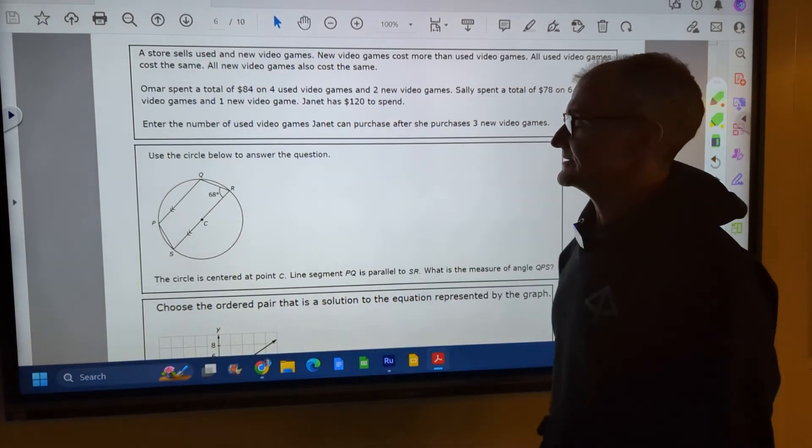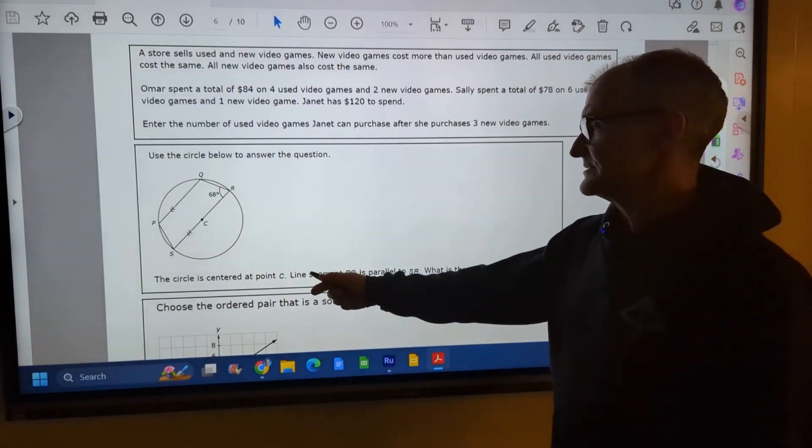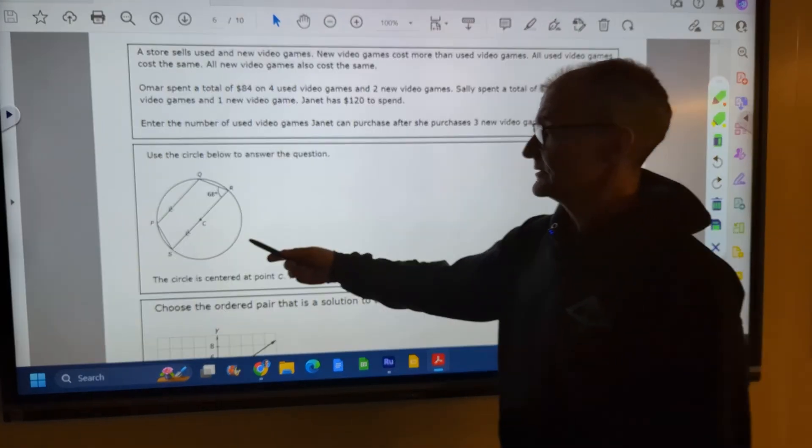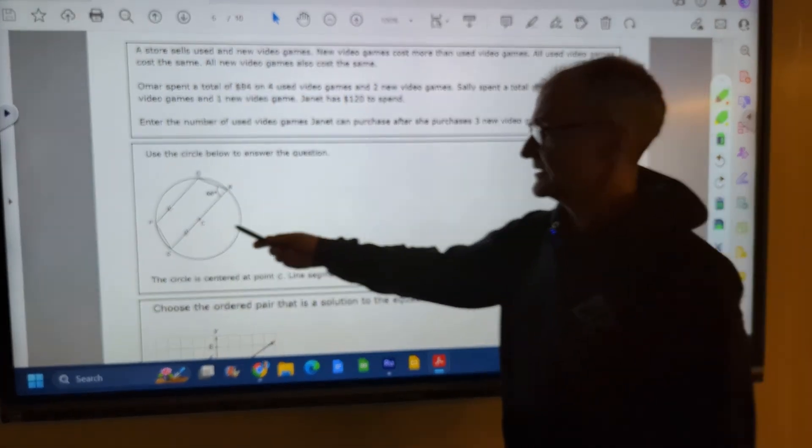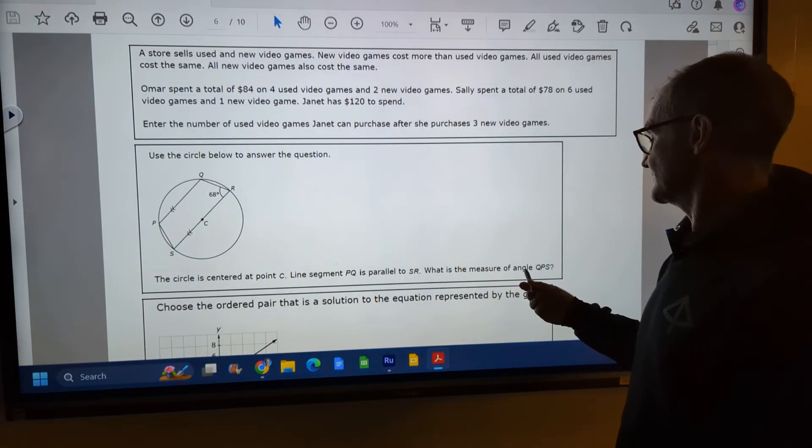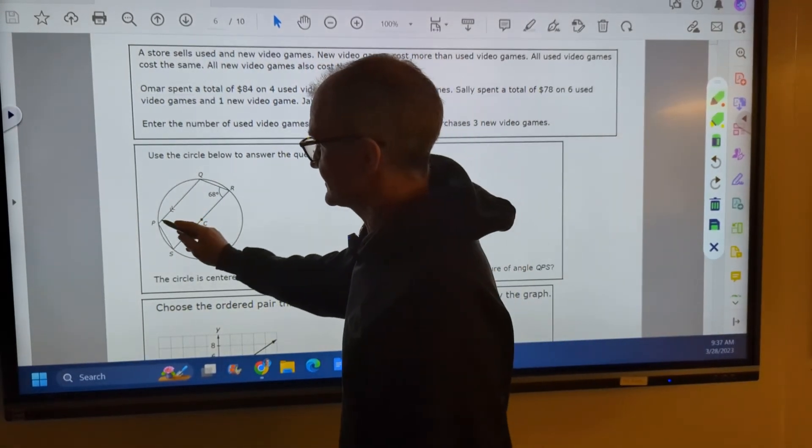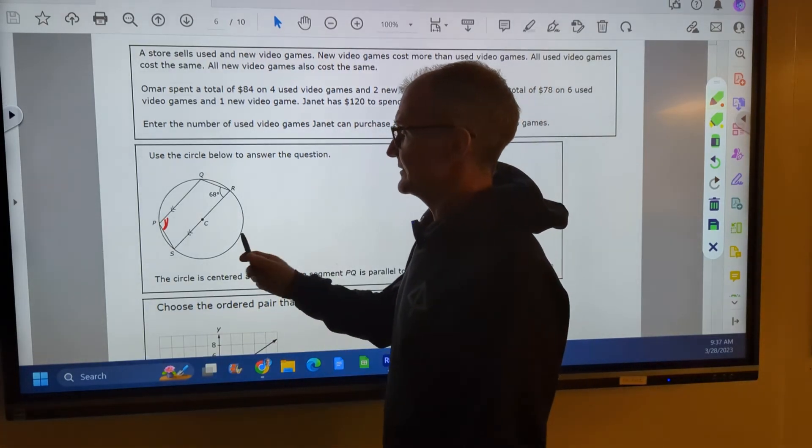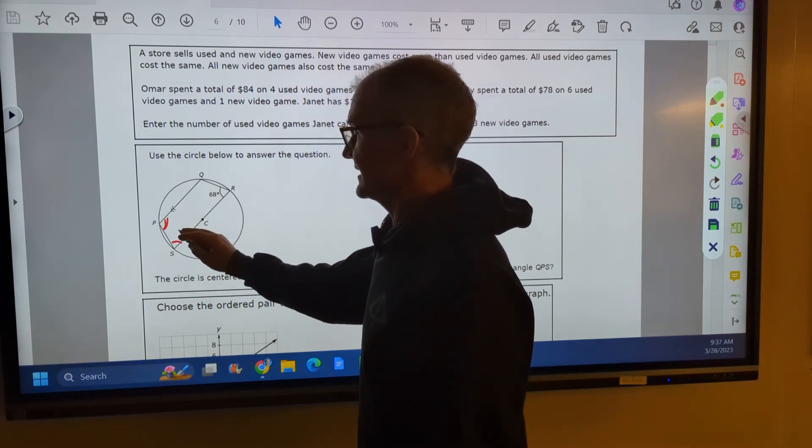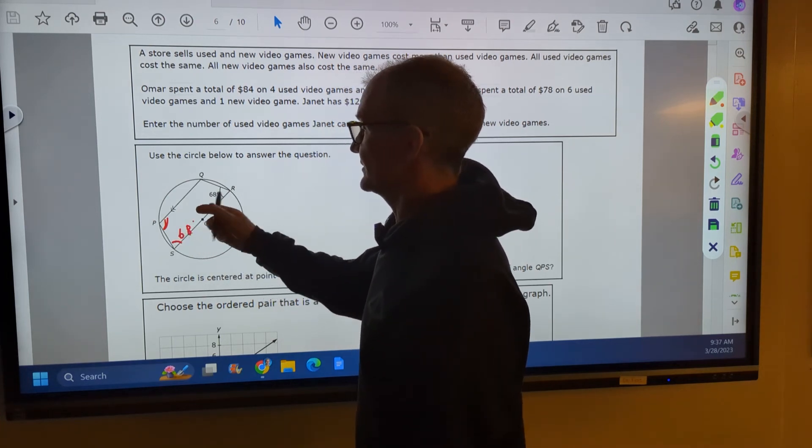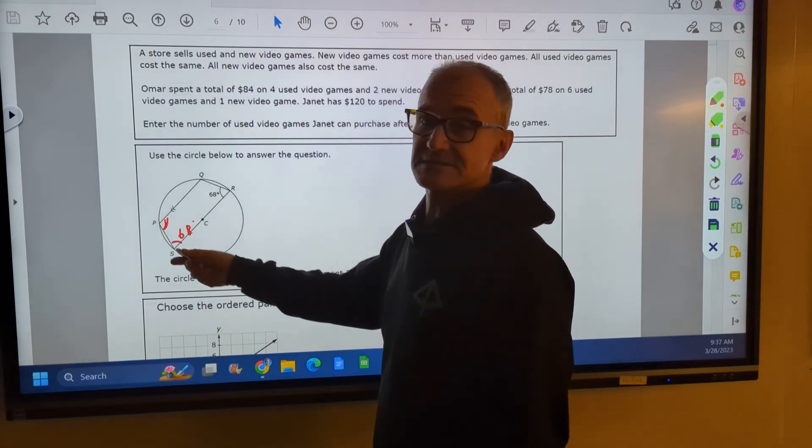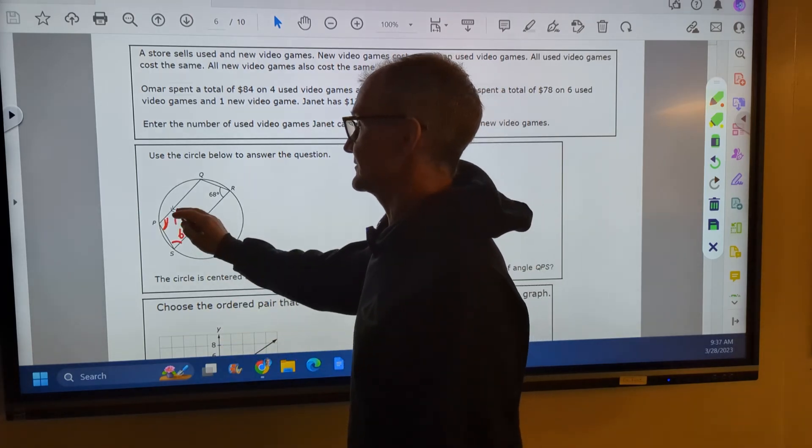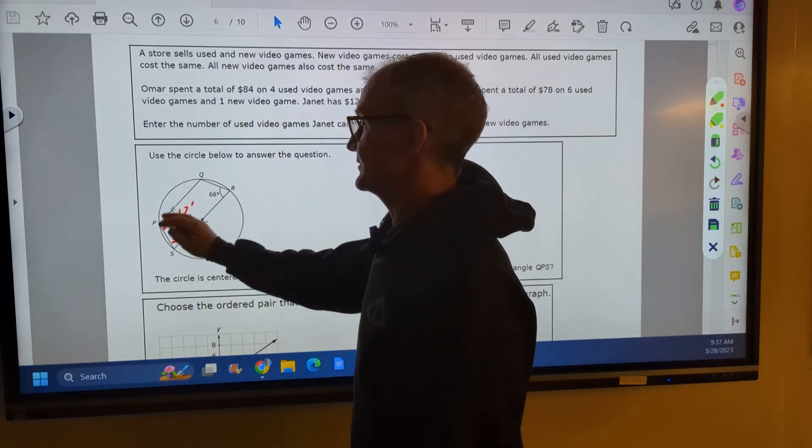All right, our next one, use a circle below to answer the question. The circle is centered at point C, so that's the diameter. Line segment PQ, line segment that line right there, is parallel to SR. That's what those double arrows mean as well. What's the measure of angle QPS? QPS, we want to know this angle here. Well, that's gonna be an isosceles trapezoid, meaning the base angles are equal. So these two are gonna have to both be sixty-eight. And then this one up here, as is this one right here, will have to be the supplement of that one. So one eighty minus sixty-eight is one hundred and twelve degrees. So the measure of QPS, one hundred and twelve degrees.